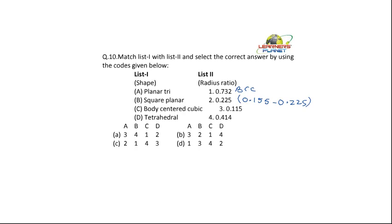Then we have the tetrahedral. So where will this tetrahedral come? 0.115. So where should this tetrahedral come? For tetrahedral, the ratio is 0.225 to 0.414.